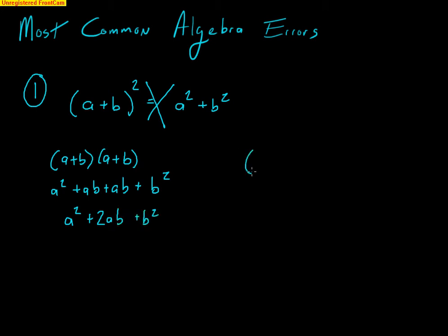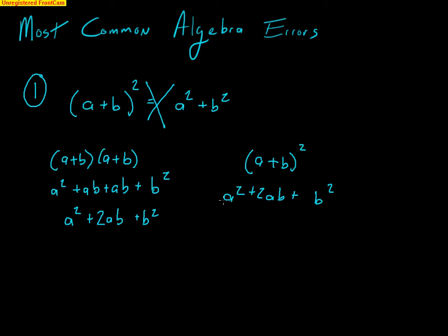Or you could just use the binomial square theorem, which is simply a rule to remember this. It's the first term squared and the last term squared, and in the middle you double those two values. So you take A times B and double it to get 2AB. That's how you get A squared plus 2AB plus B squared — that's probably the most common mistake I see.